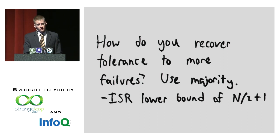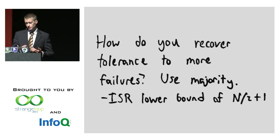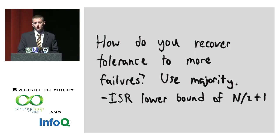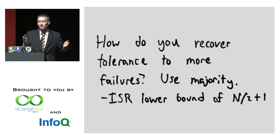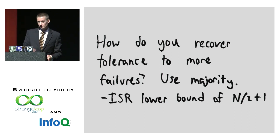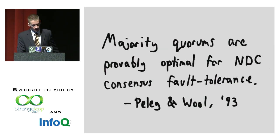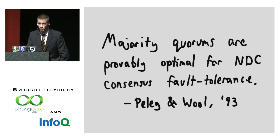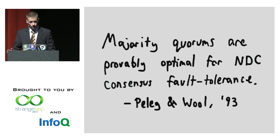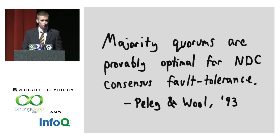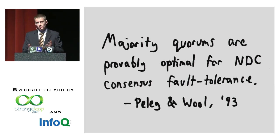To improve this replication model: the problem is we acknowledge data written only to one node. Instead, choose a majority of nodes — if you ever fail and lose coherence, you've got a majority to pick from. The chances of a single-node failure causing data loss are lower. It shifts failure earlier in the timeline — you're more likely to stop accepting writes but less likely to destroy data. We know this is true because majority quorums are provably optimal for non-dominated coterie consensus fault tolerance.